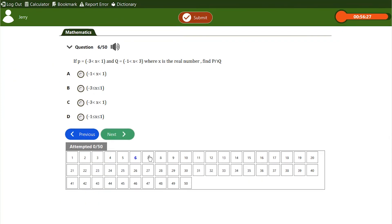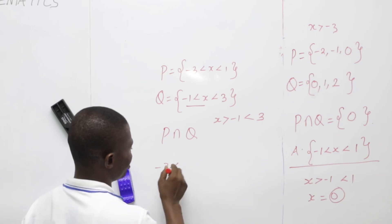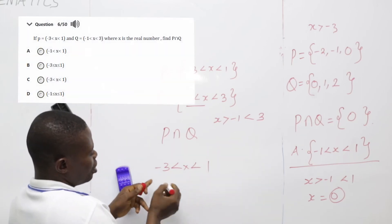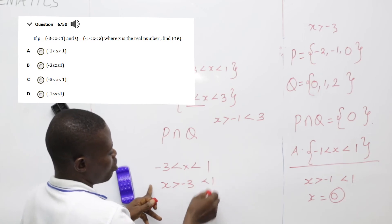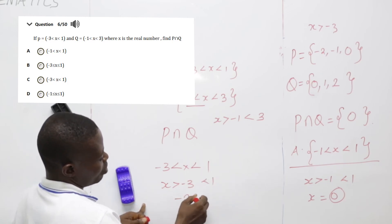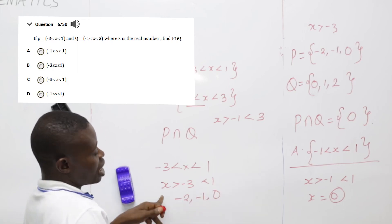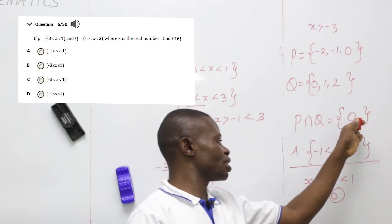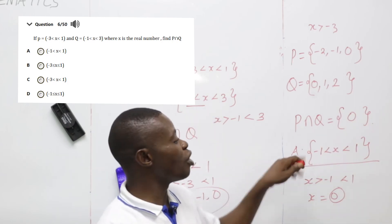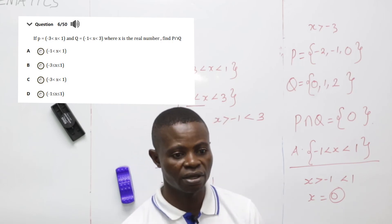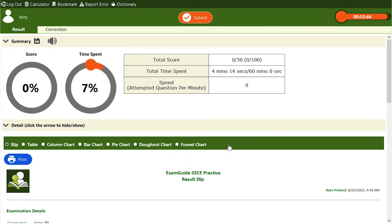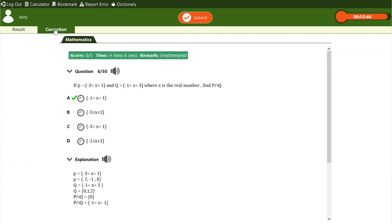Let me verify this. Let us test option C: minus 3 less than X less than 1, meaning X is greater than minus 3 but less than 1 — so elements are minus 2, minus 1, 0. But our solution only has 0, not minus 2 and minus 1. So option C does not match. Our answer is 0, which suits option A. Let us confirm with the software — yes, option A is the answer.